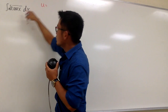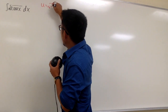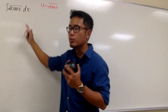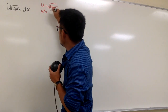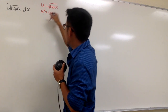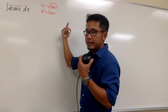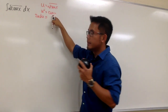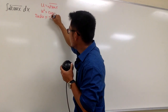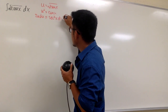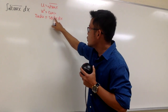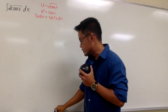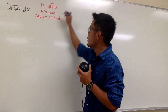Let u equal the square root of tangent x. We will take this integral from the x world to the u world. Let's go ahead and square both sides, because this way it's easier to differentiate. So we have u squared equals tangent x, and then we differentiate.